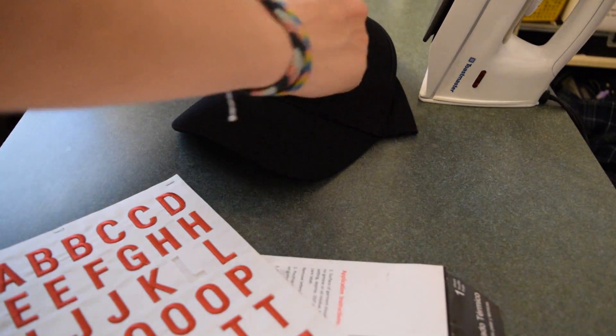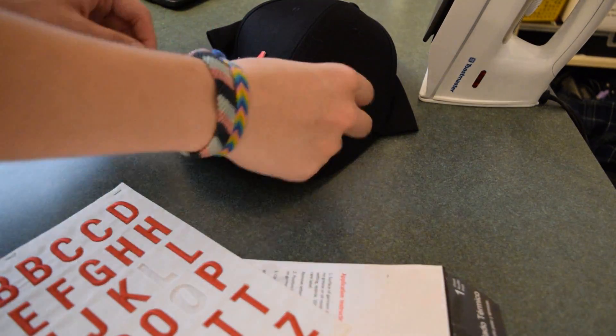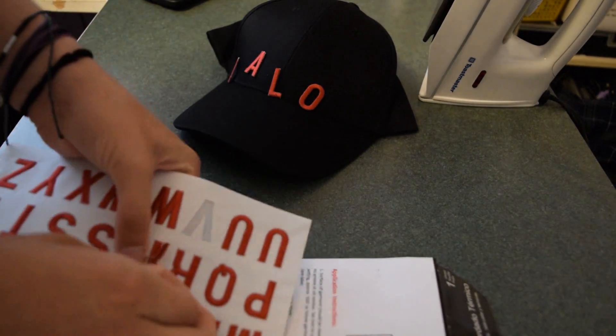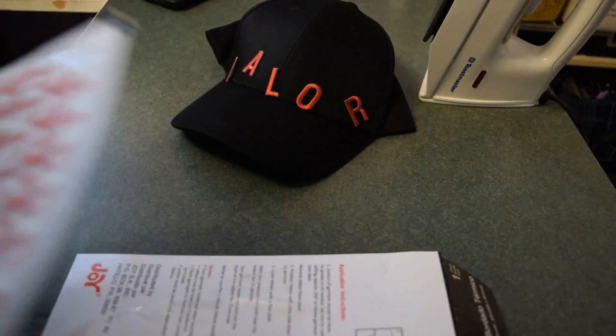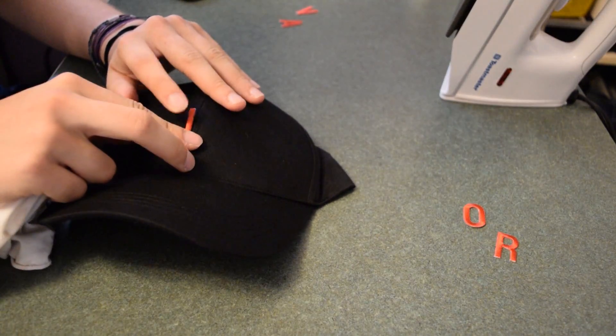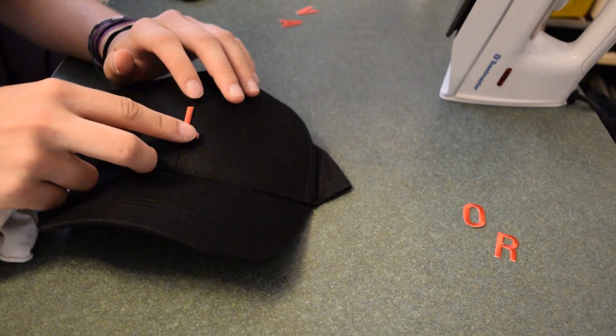I first peeled the iron-on letters off the sheet and placed them the way I wanted on the hat. Once I was happy with the spacing, I started with the middle letter and worked outward.